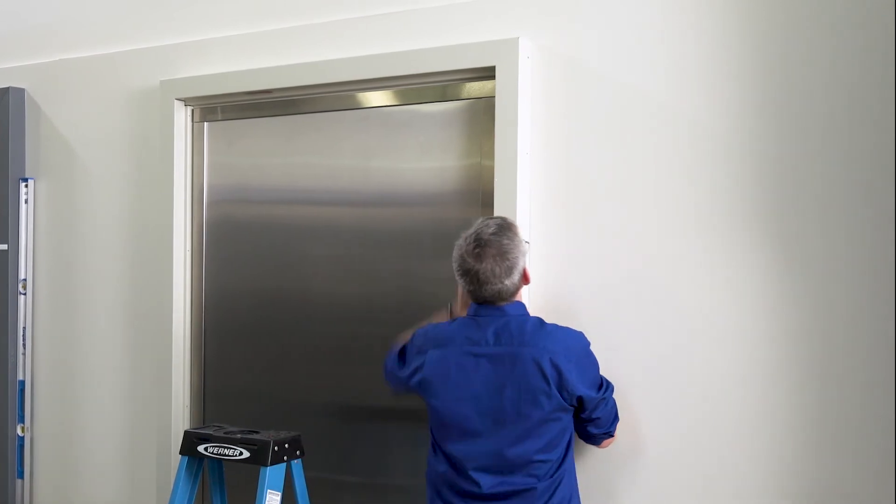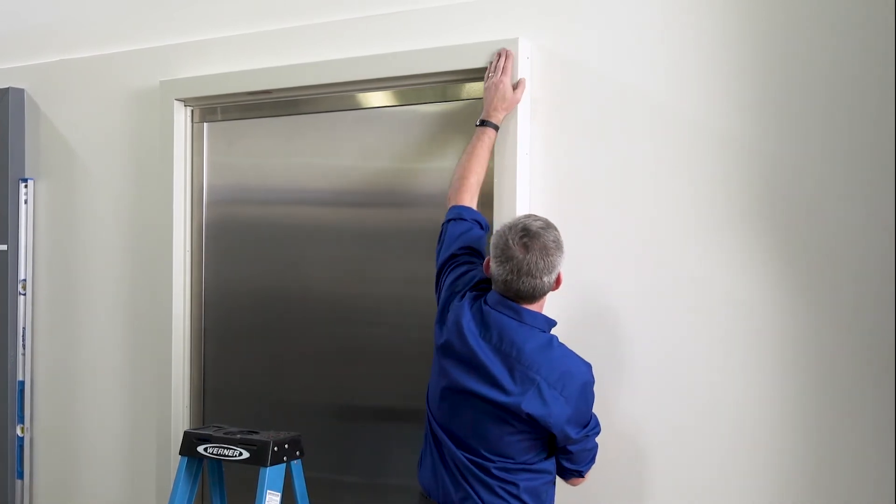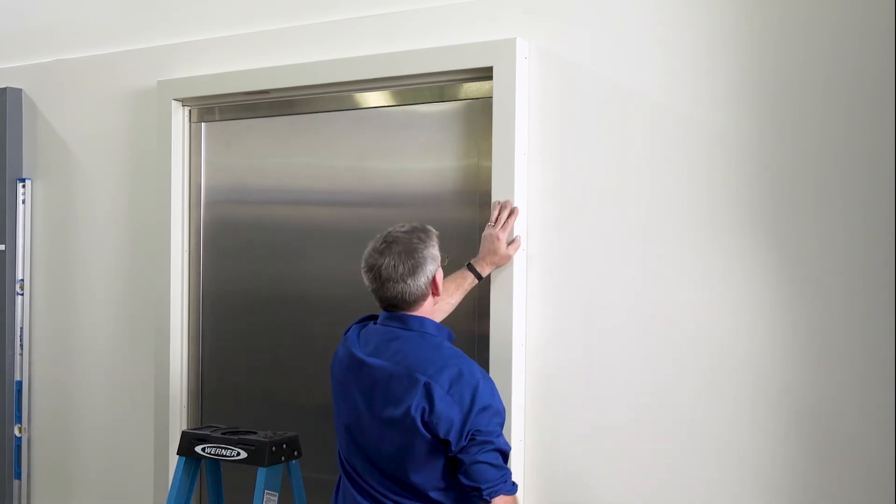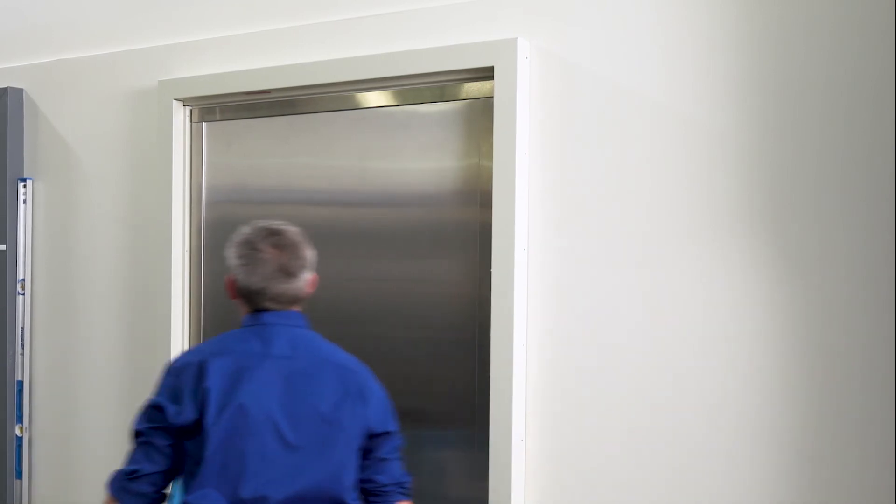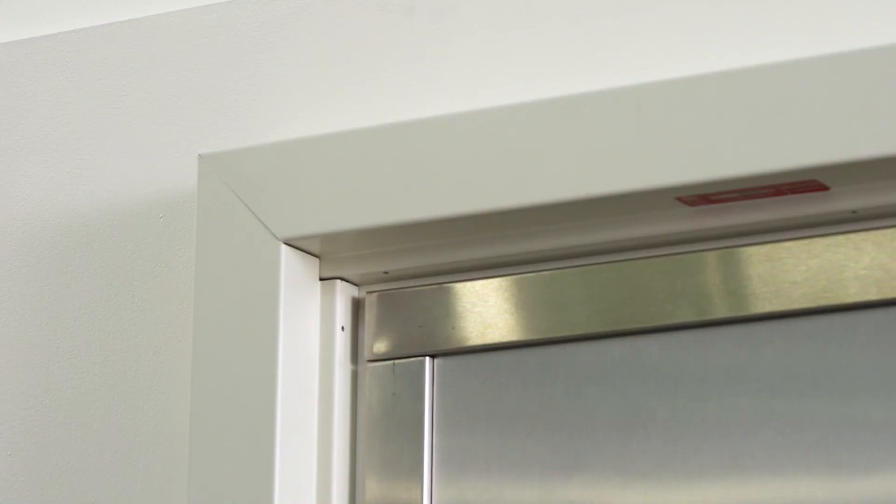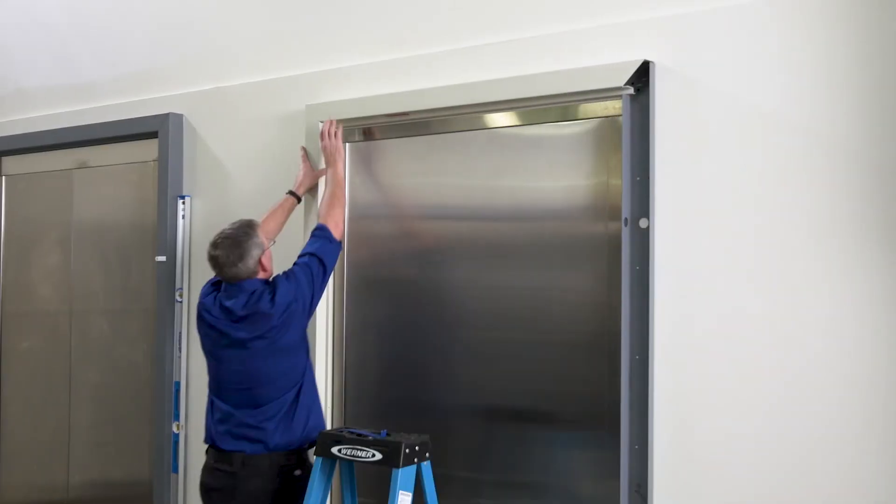If the shells do not have proper alignment at the miter joints, remove the shells and adjust the sub buck for proper alignment. Once the shell fit has been verified, remove the shell starting with the leg, then the header.